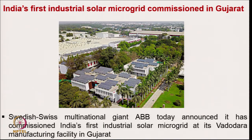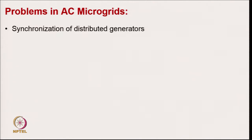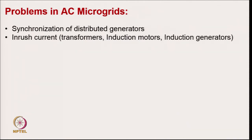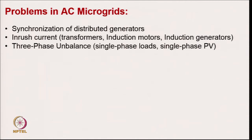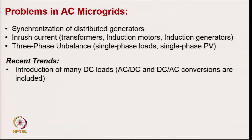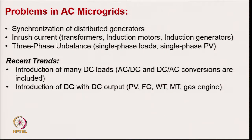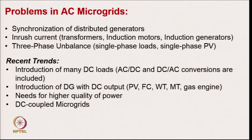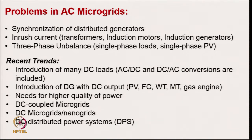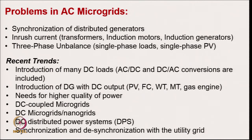India's first industrial solar microgrid was commissioned in Gujarat — Swiss multinational ABB announced its commissioning of India's first industrial solar microgrid at a manufacturing facility in Gujarat. Coming to the problems of AC microgrids: synchronization of distributed generators, inrush current problems like transformers and induction motors, three-phase unbalanced conditions with single-phase loads and single-phase PV generation. Recent trends include introduction of many DC loads, AC-DC and DC-DC-AC conversion, diesel distributed sources with DC output like photovoltaic, fuel cell, wind turbine, micro turbine, gas turbine, and needs for higher quality of power, DC microgrids, nano grids, and synchronization/desynchronization with the utility grid.